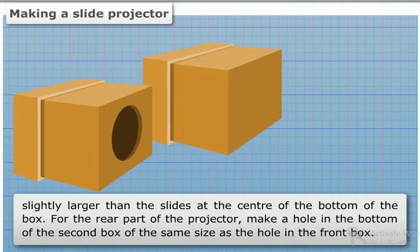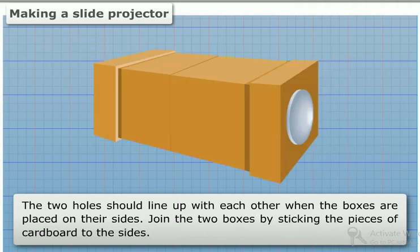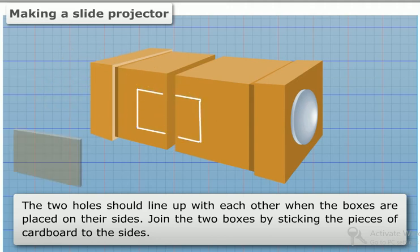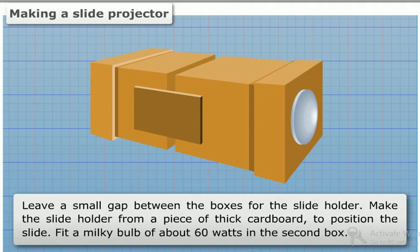Make a hole in the bottom of the second box of the same size as the hole in the front box. The two holes should line up with each other when the boxes are placed on their sides. Join the two boxes by sticking pieces of cardboard to the sides, leaving a small gap between the boxes.